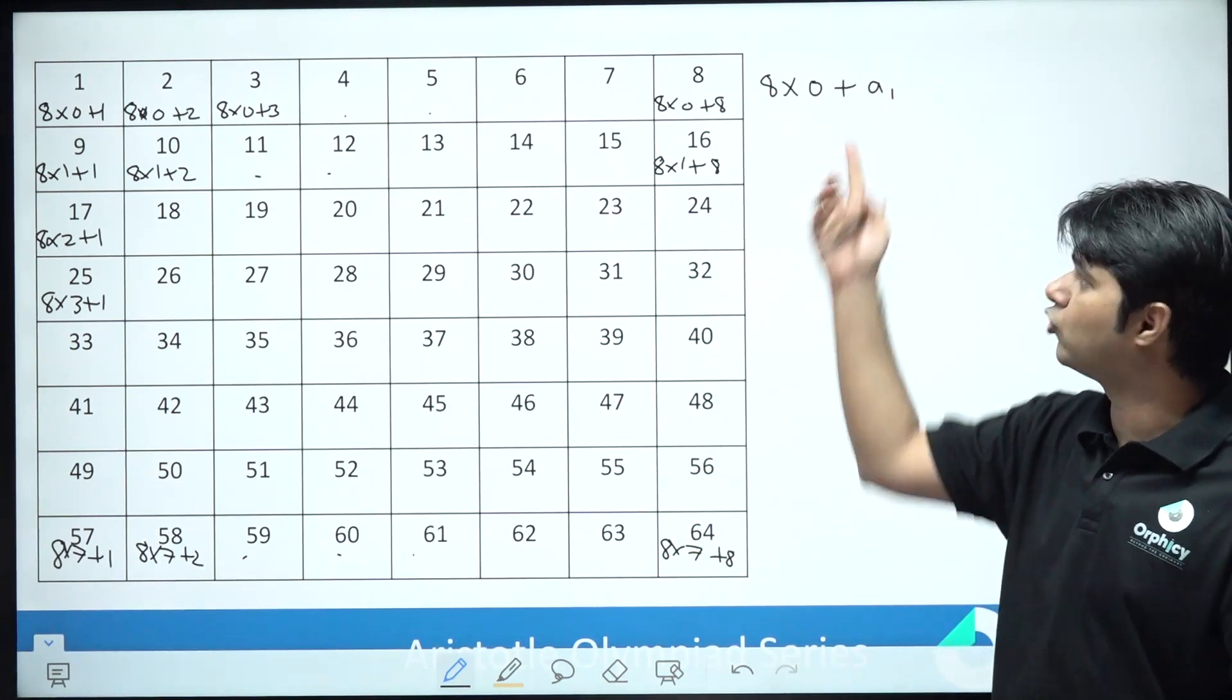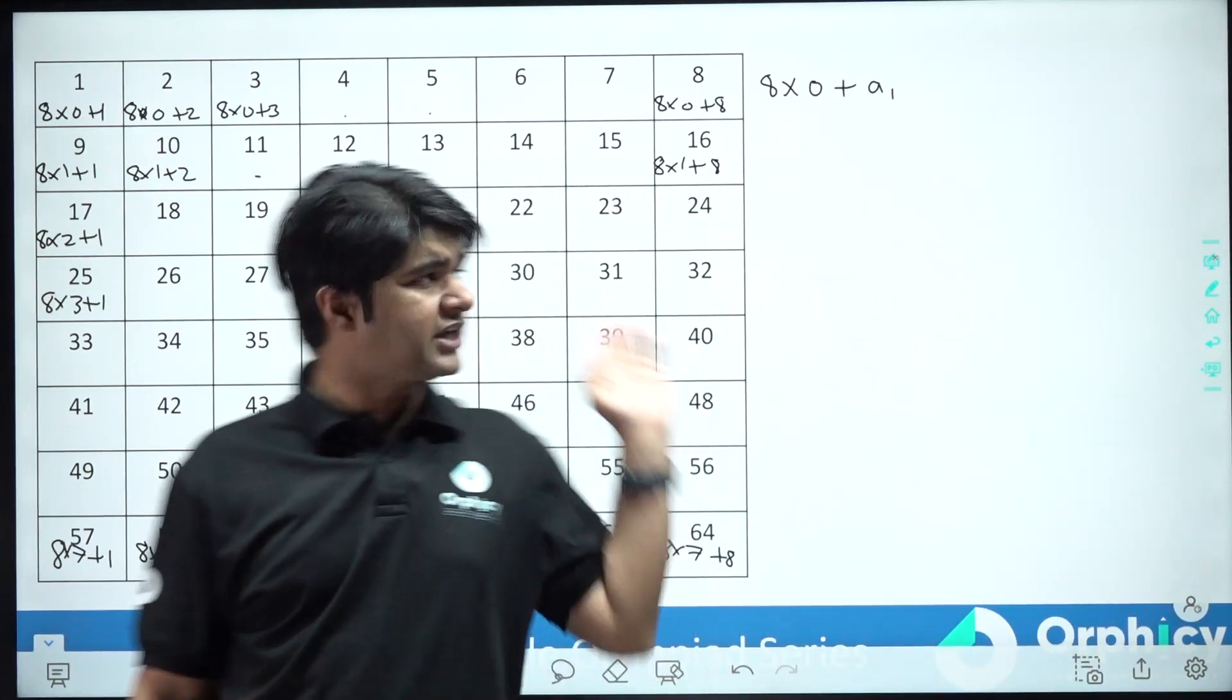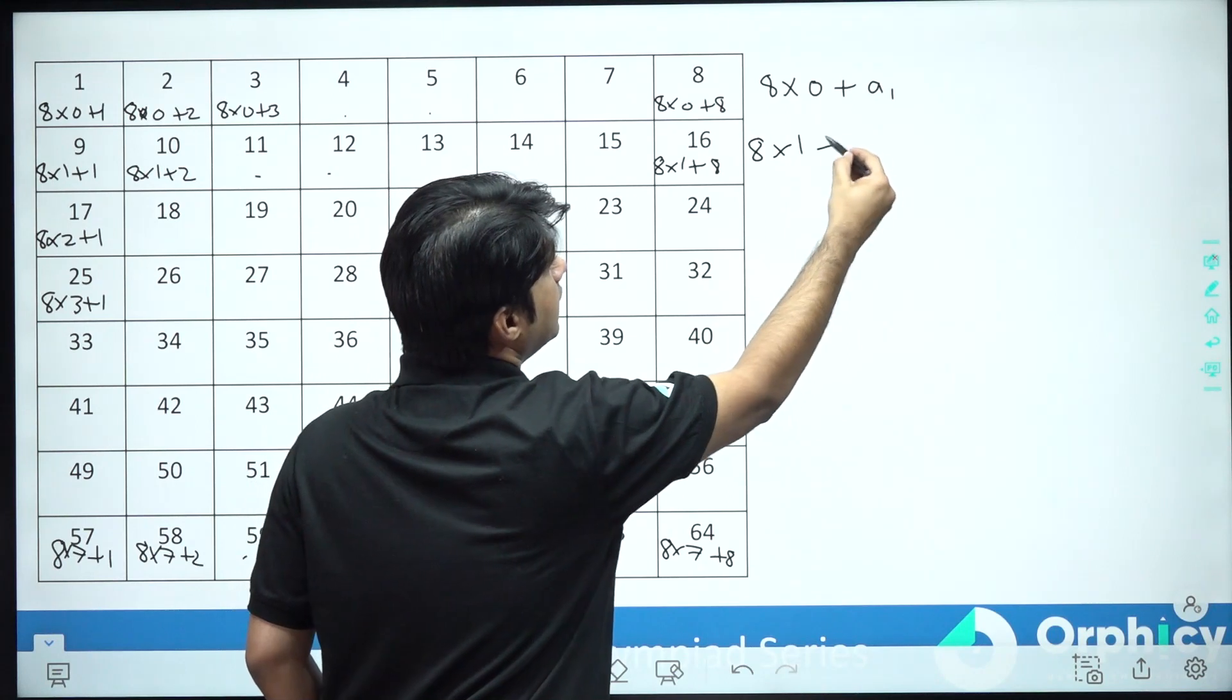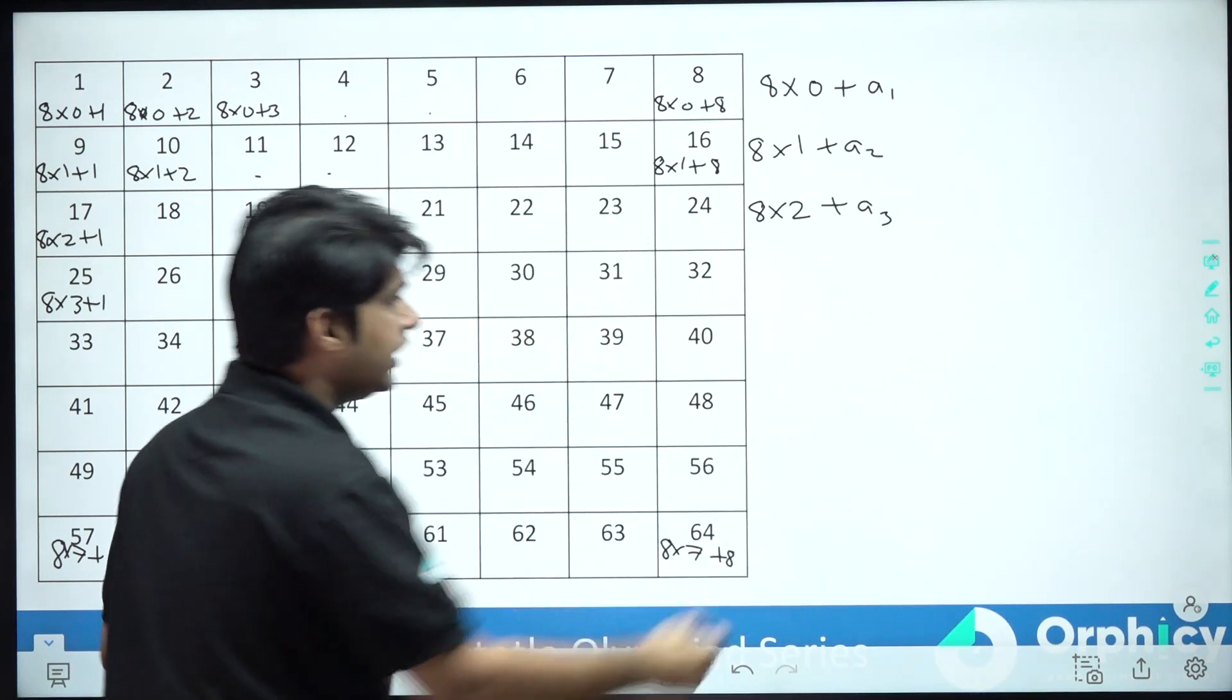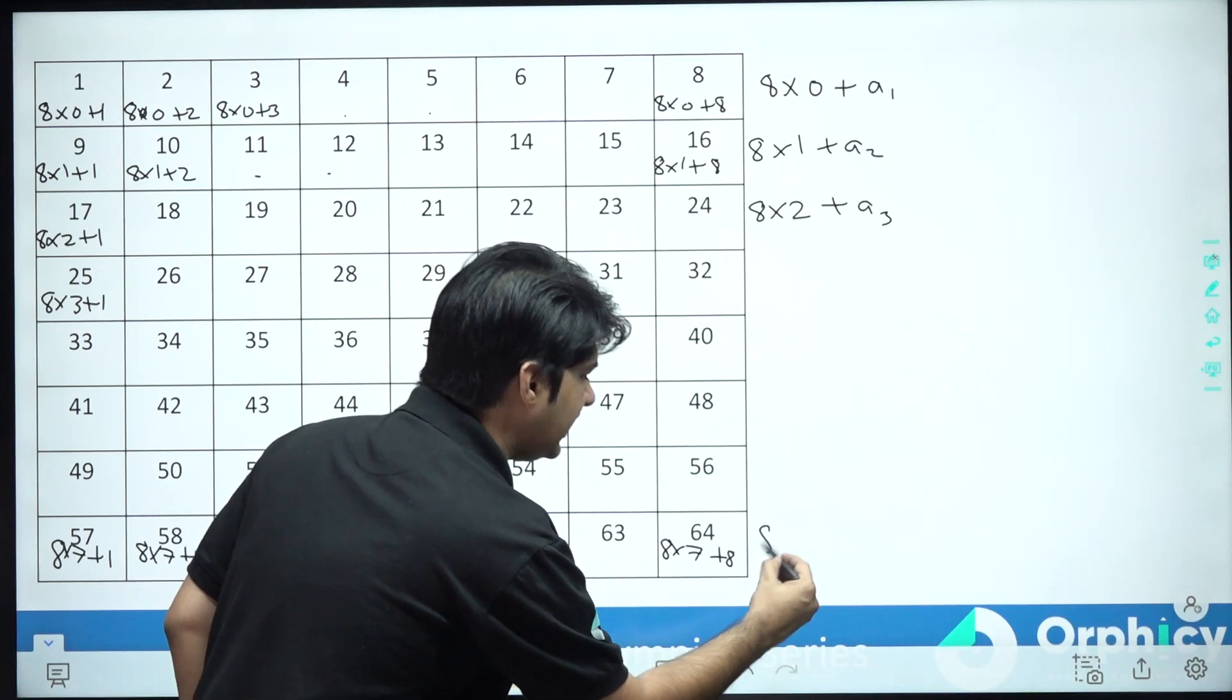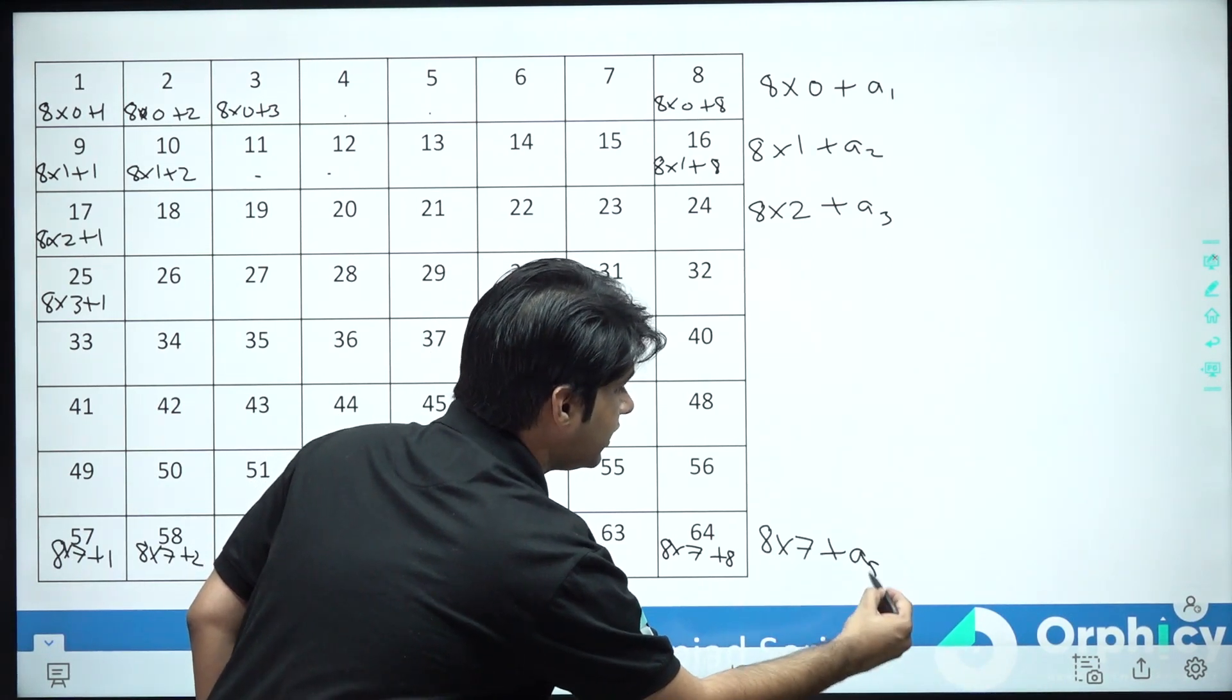I can write as 8 x 0 plus A8, and so on till the number from the last column. I can say that number is 8 x 7 plus A8.